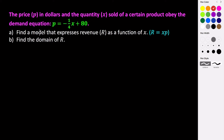Part a says: find a model that expresses the revenue — the amount of money that we make — as a function of x, the number of items sold. Revenue equals the number of items sold times the price. So we take the price expression and multiply by x to get our revenue function.